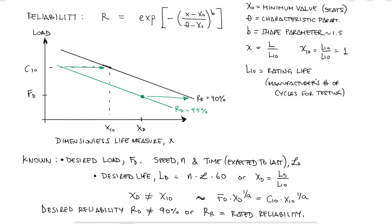If I start at X10, which is the dimensionless manufacturer's rated life, and solve for X using the reliability equation and a reliability value of 95%, we'll call this value of X, XB.